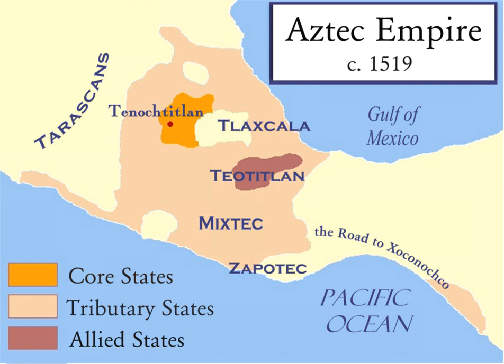In ancient history, civilizations did not have definite boundaries as states have today, and their borders could be more accurately described as frontiers. Early dynastic Sumer and early dynastic Egypt were the first civilizations to define their borders.